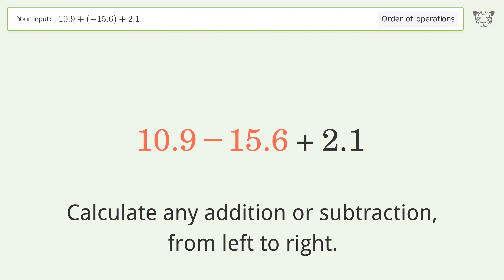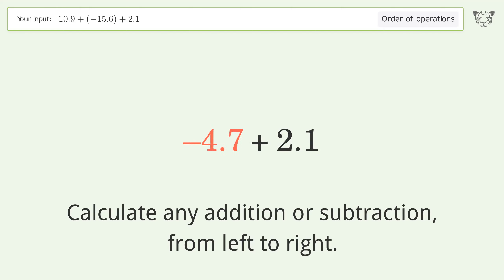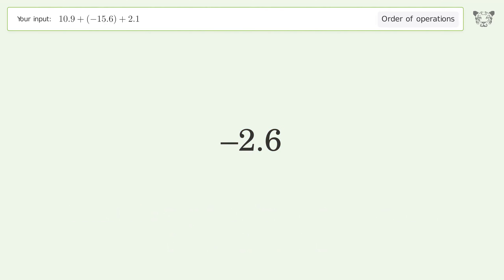10.9 minus 15.6 equals negative 4.7. Negative 4.7 plus 2.1 equals negative 2.6. And so the final result is negative 2.6.